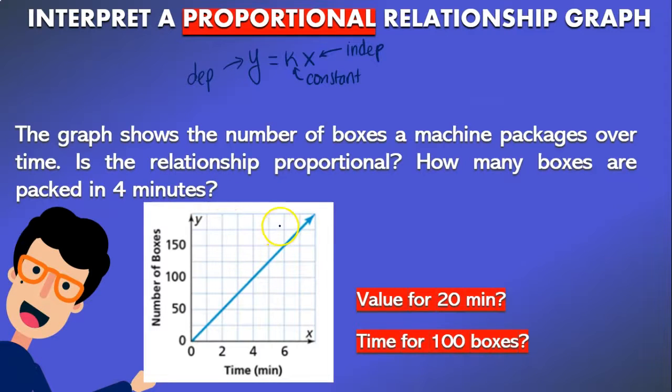Well, the first question is if the graph shows a proportional relationship. As we can see it is a straight line and it also passes through the origin (0, 0), meaning that it is a graph that shows a proportional relationship.